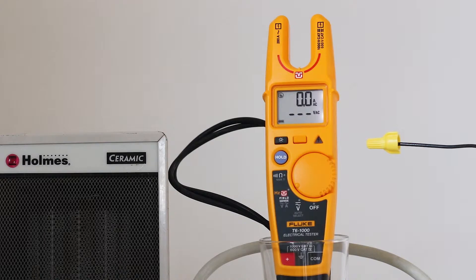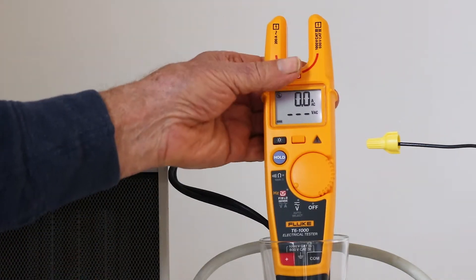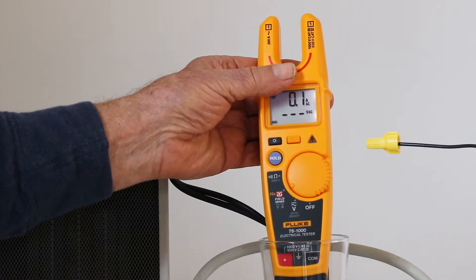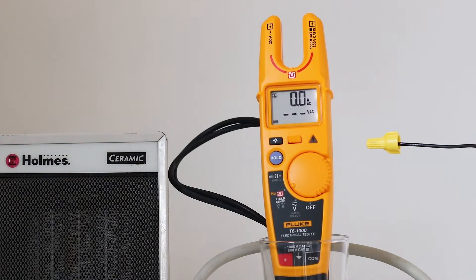A non-contact DVM that measures volts and amps in a single readout. This meter, the T6-1000 electrical tester, is orders of magnitude safer and more efficient than any I have seen.